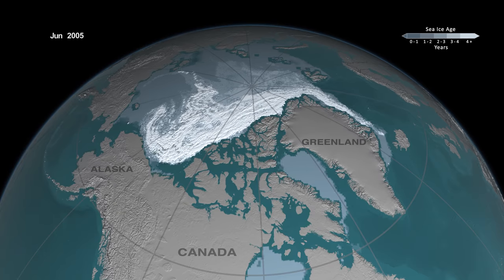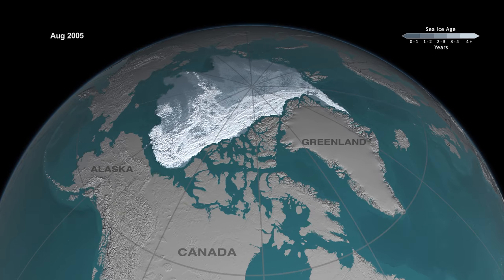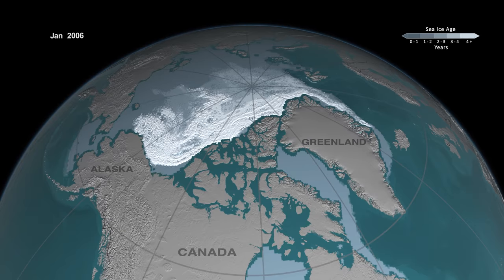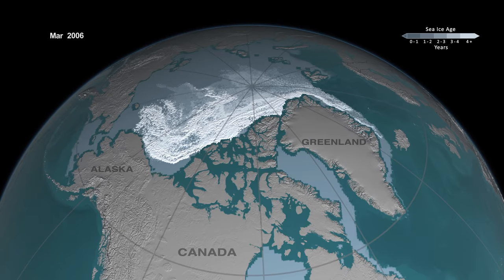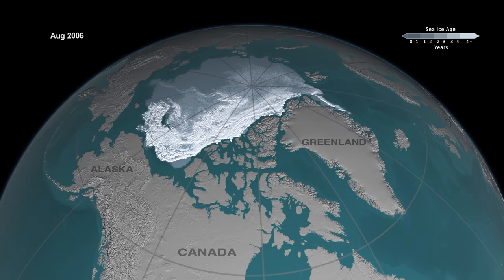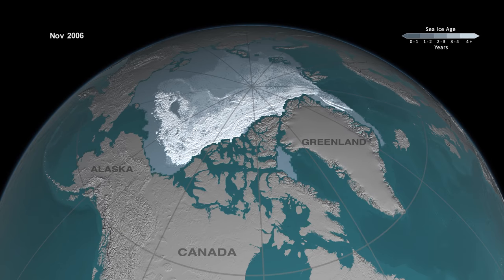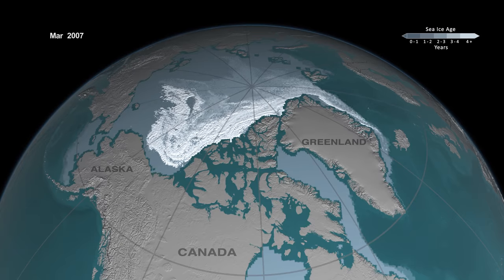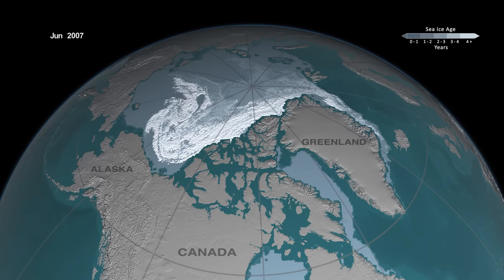But in recent years, we've seen less replenishment. There's been more melt during the summer, so the ice that goes out through Fram Strait has not been compensated by the ice growth.